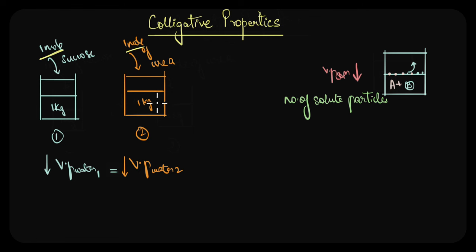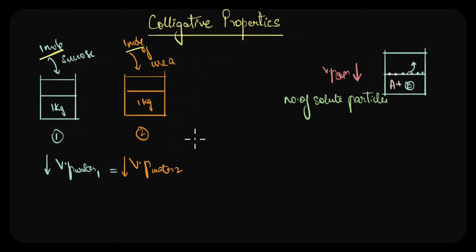These properties that depend on the number of solute particles are known as colligative properties. In this video, let's discuss one such colligative property called elevation of boiling point.